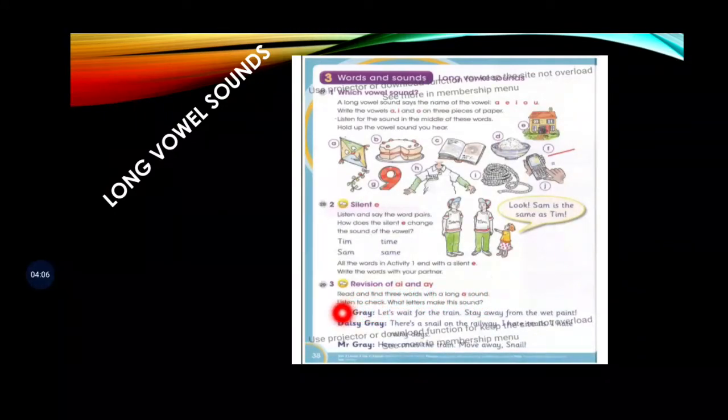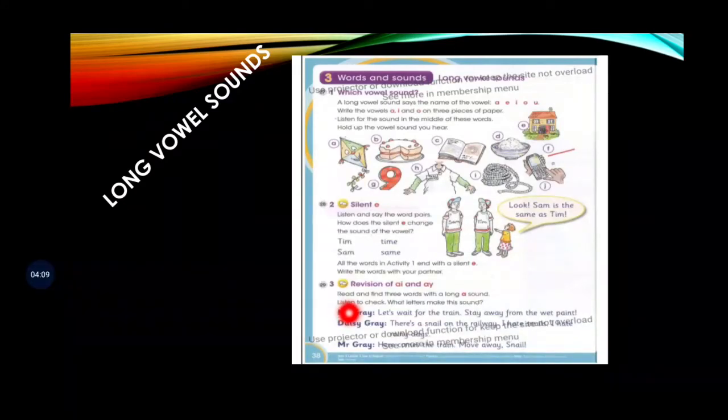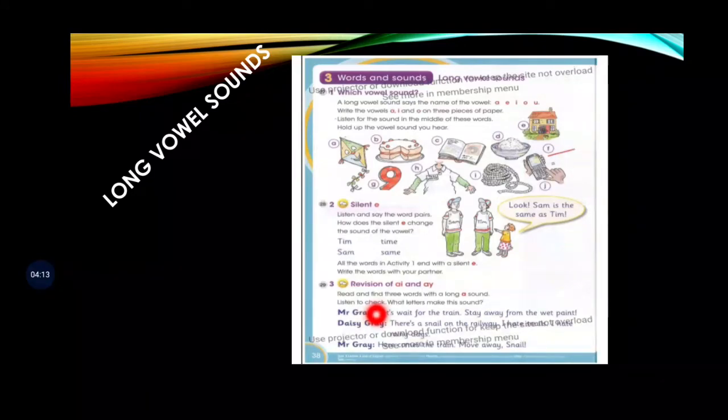Daisy gray - day, daisy A-I is creating the long vowel sound. Gray, A-Y is creating the long vowel sound. There's a snail on the railway - snail again, A-I is creating the long vowel sound. Railway, A-I is creating the long vowel sound.